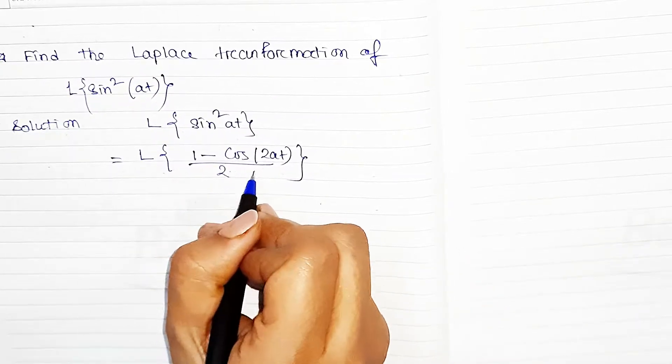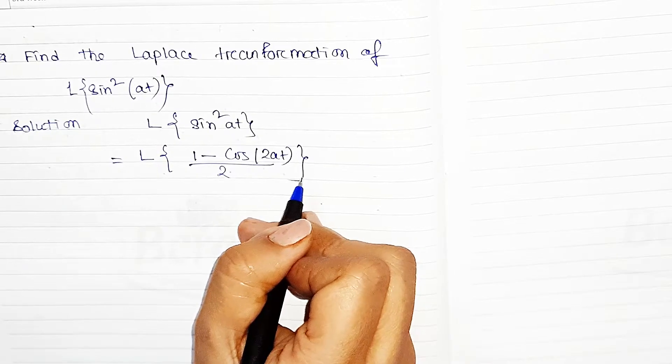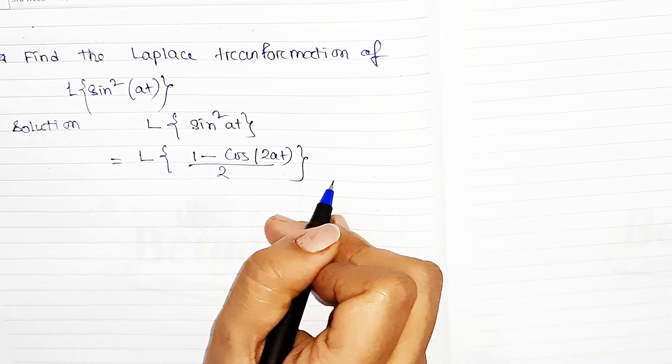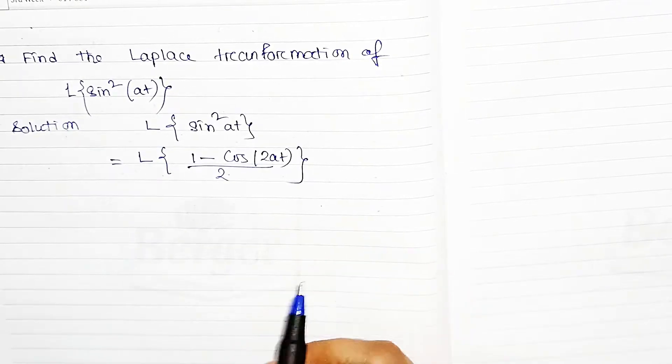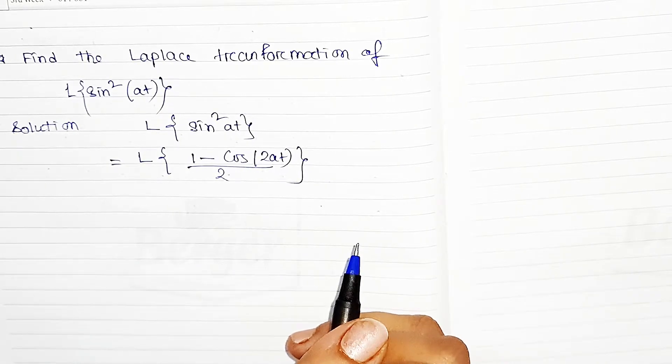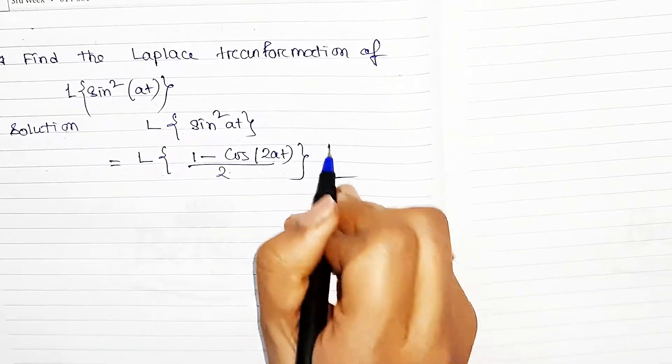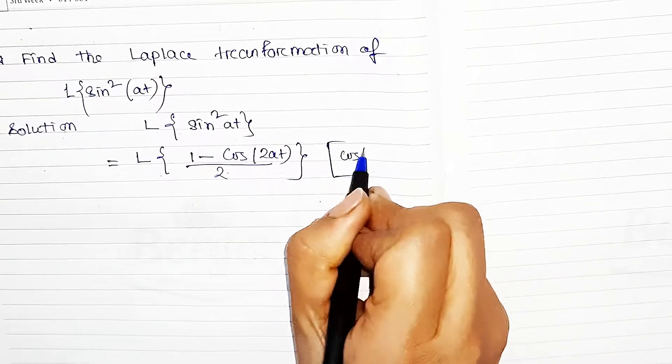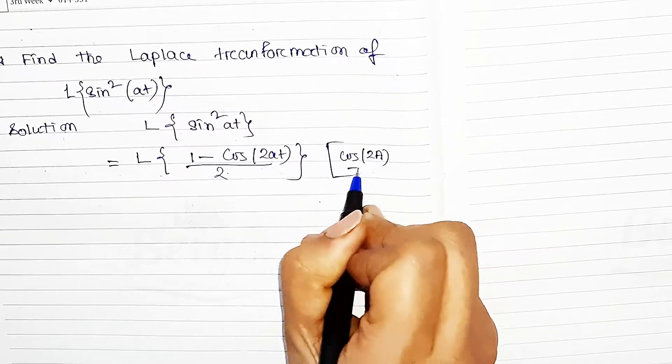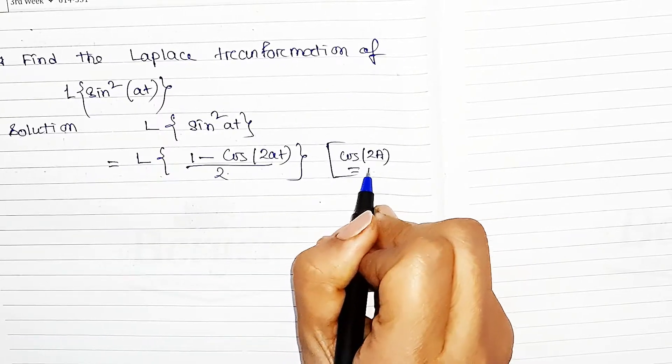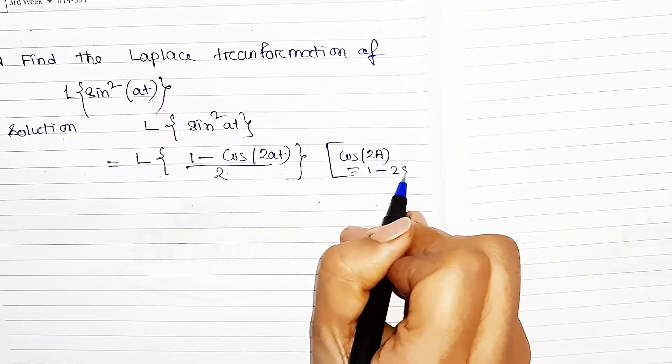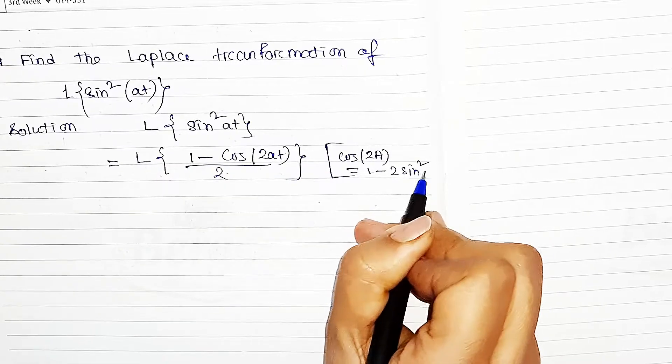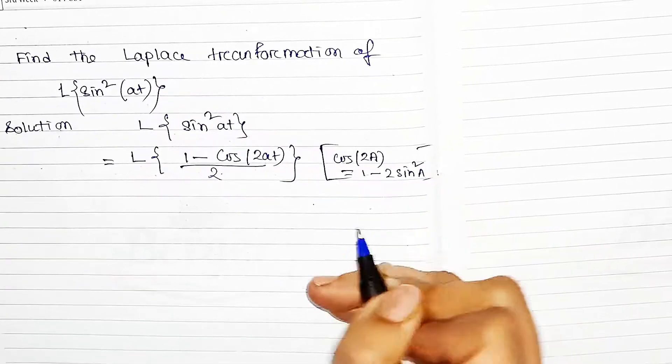I mean cos(2A) equals 2sin²(A) minus 1. Cos(2A) equals 1 minus 2sin²(A). This is the formula.